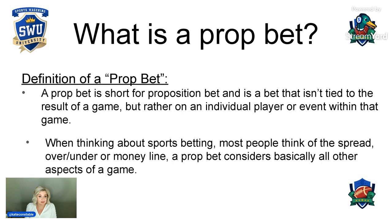What is a prop bet? Well, we better define it if we're going to learn more about it. The definition of a prop bet — prop is short for proposition bet. This is a bet that isn't necessarily tied to the result of a game, but rather to an individual's performance or an event within that game. When you think about sports betting, most people just think about the three most popular types of bets: spread, the over-under, the money line. But a prop bet considers basically all other aspects of a game.